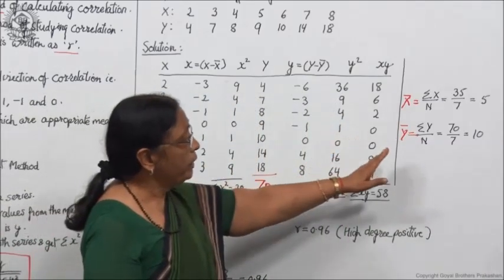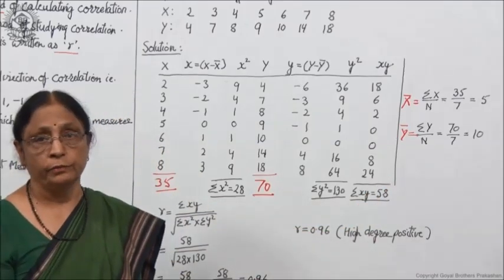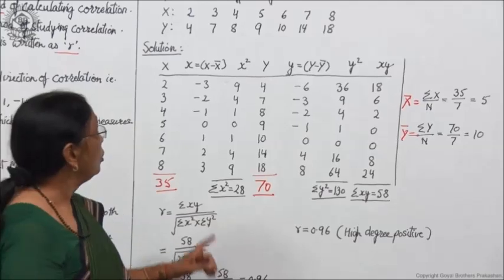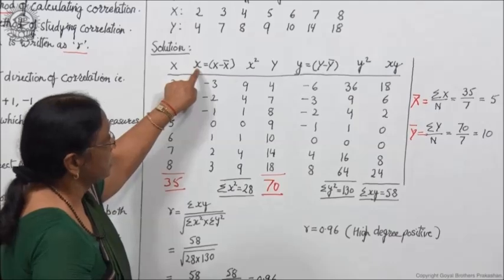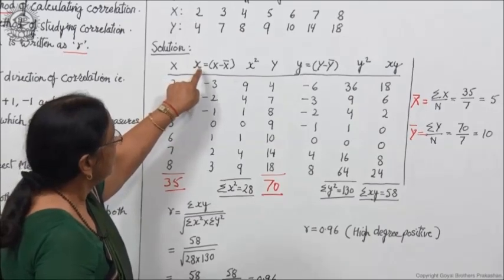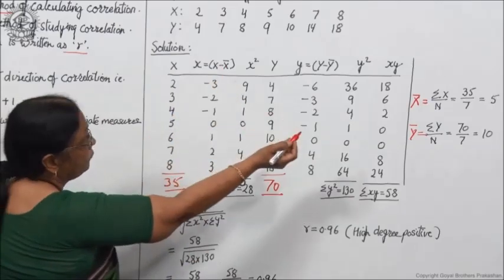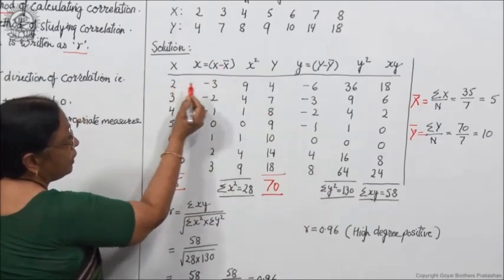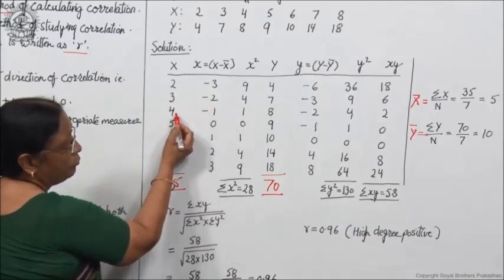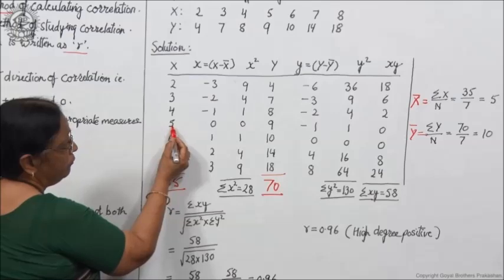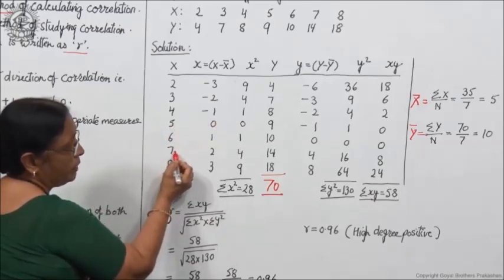After finding out the mean, you have to take out the deviations. This is the x column — when you take out the deviation, name it small x. So small x = x − x̄, where x̄ = 5. Therefore: 2−5 = −3, 3−5 = −2, 4−5 = −1, 5−5 = 0, 6−5 = 1, 7−5 = 2, and 8−5 = 3.